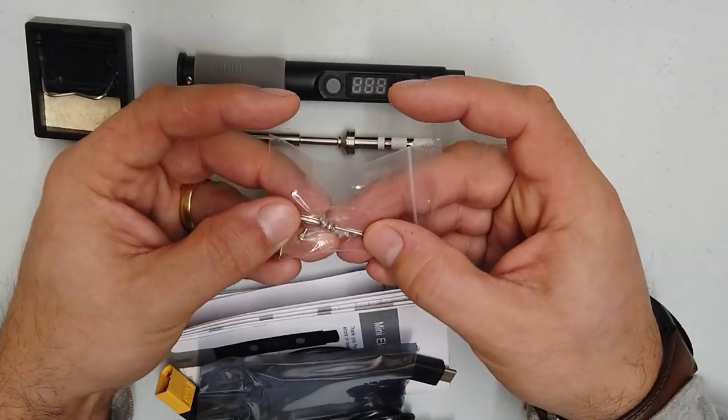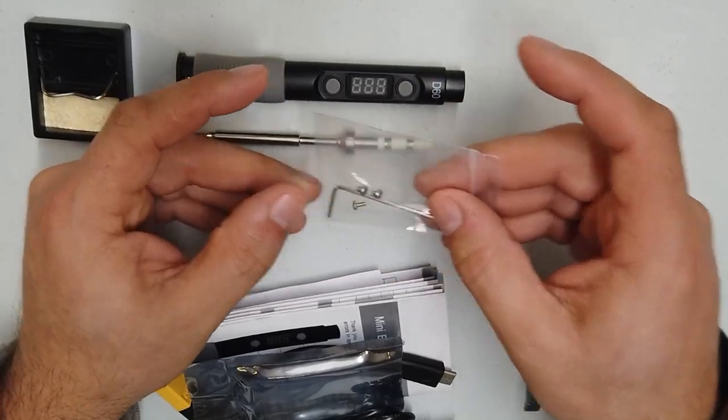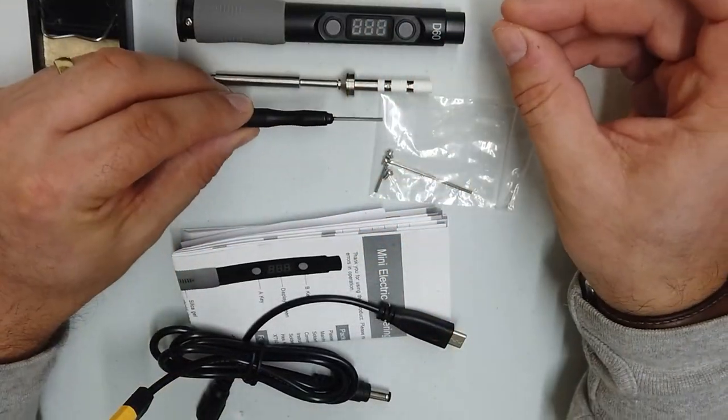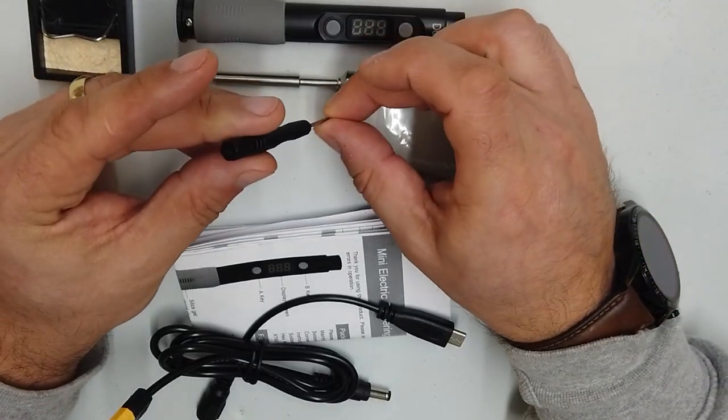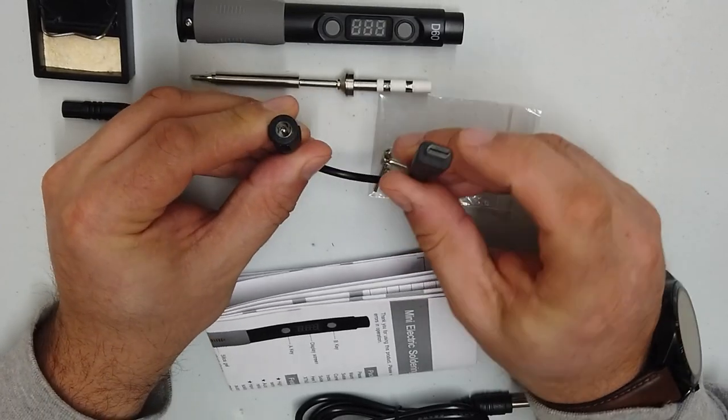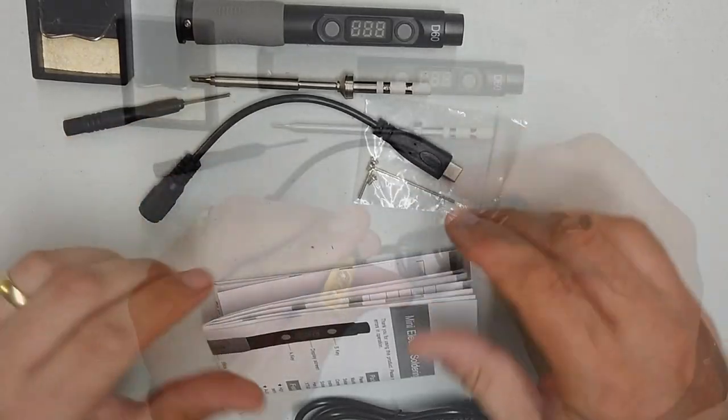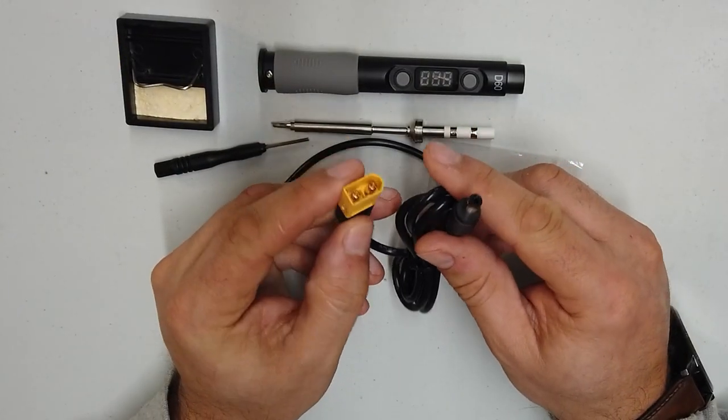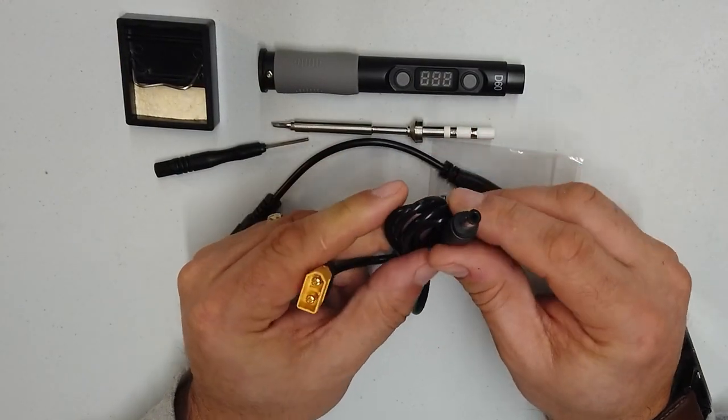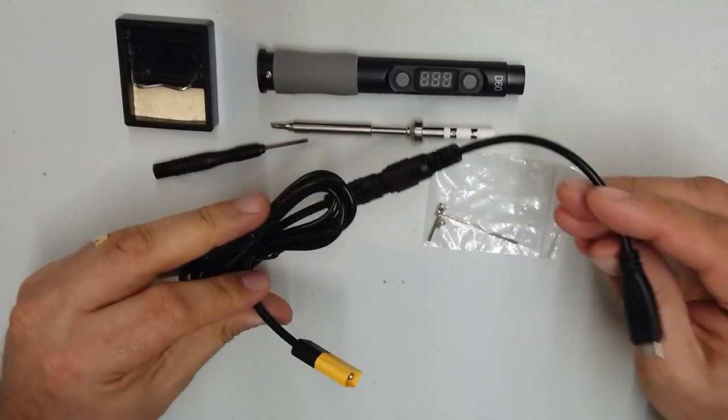A set of three little earthing screws and a tiny little Allen wrench. We have another tiny Allen wrench type screwdriver. An adapter cable which goes from DC barrel jack to a USB-C connector, and an XT60 connector to a DC barrel jack.